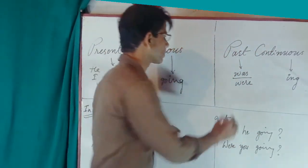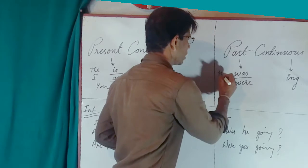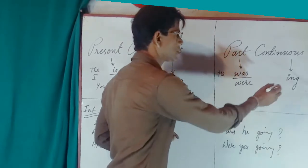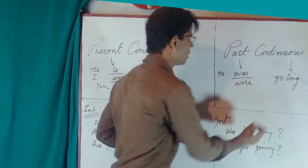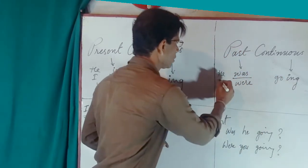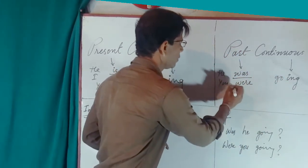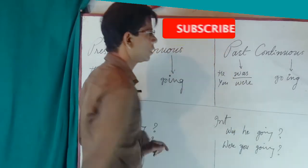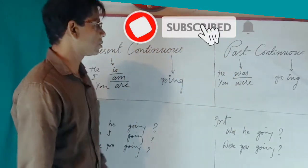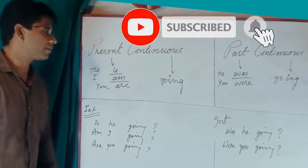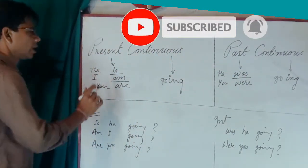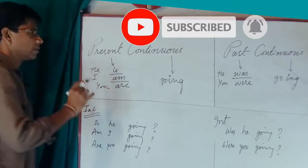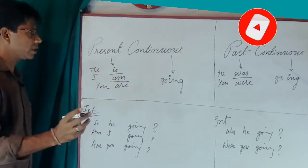For past continuous tense, we use 'ing' for continuous and 'was' or 'were' for past. For example: he was going, you were going. These are the affirmative sentences in past continuous tense.